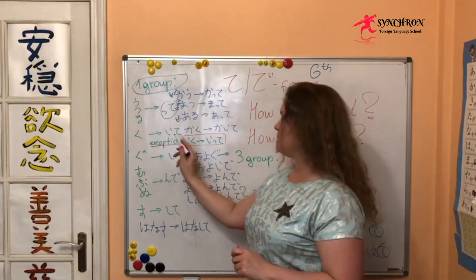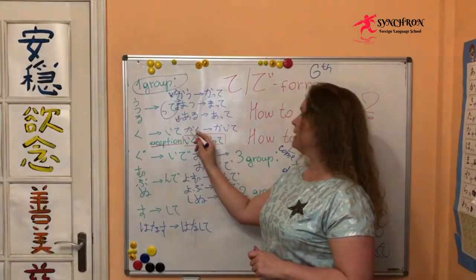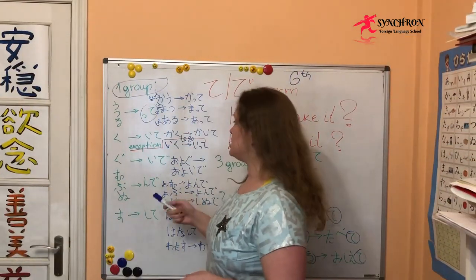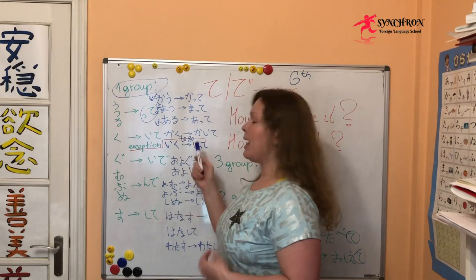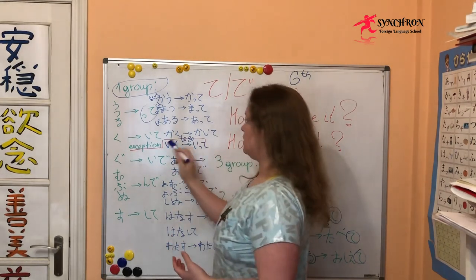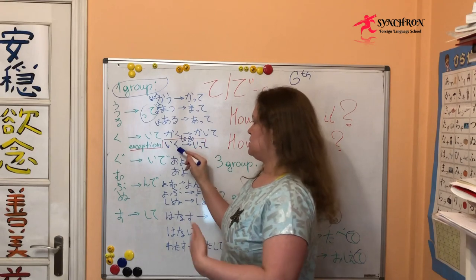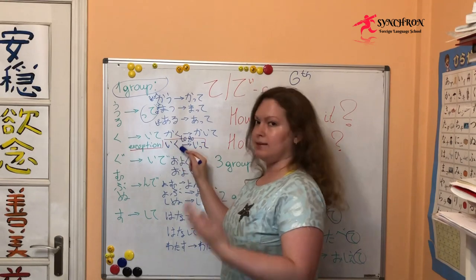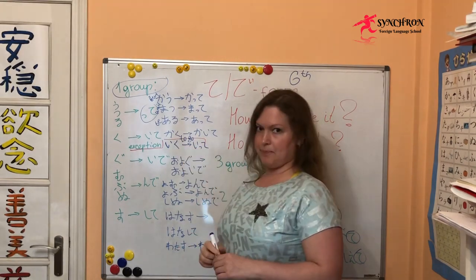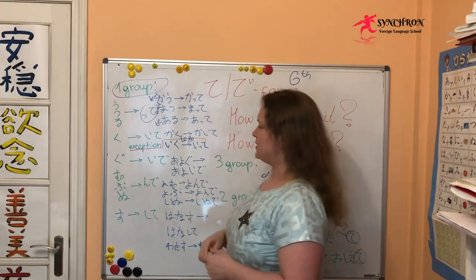く (ku) changes into いて (ite). For example, 書く (kaku) → 書いて (kaite). The only exception is to go — いく (iku) → いって (itte). It ends with く, but it doesn't become いいて (iite) — it becomes いって (itte). There are no more exceptions here.